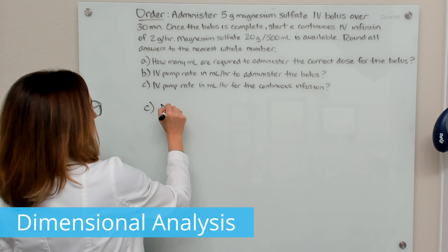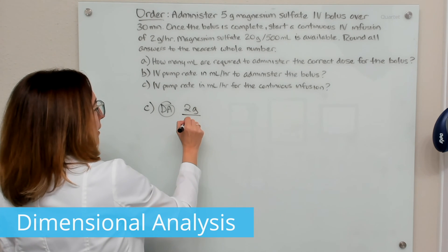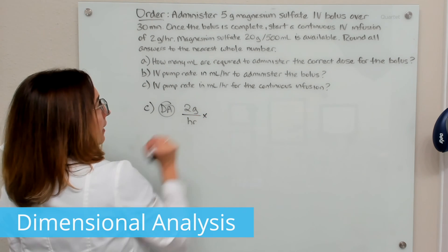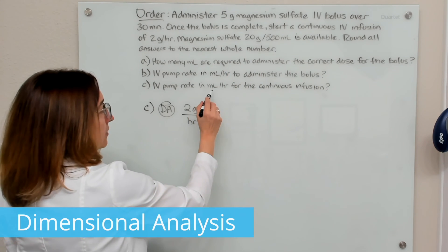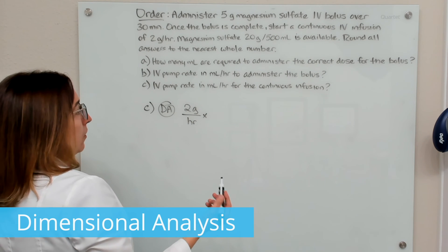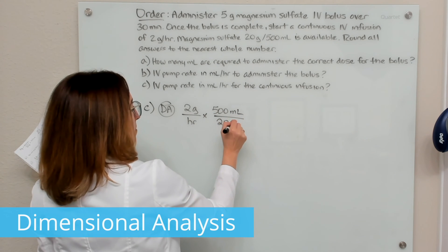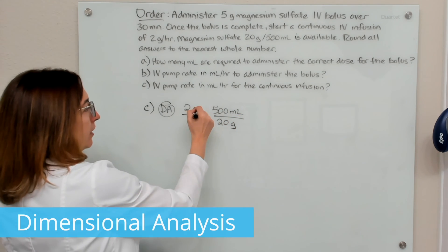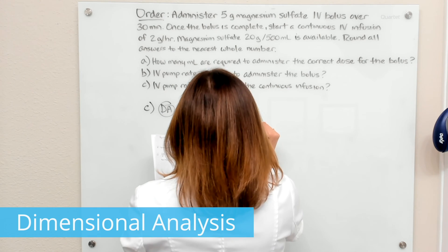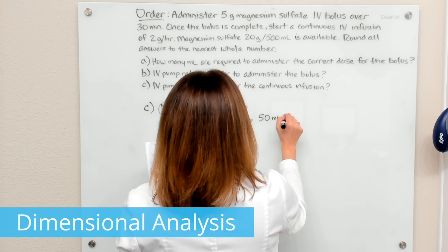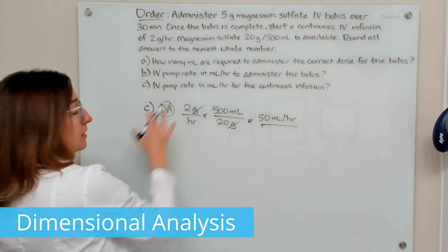Using dimensional analysis first, I would write down the ordered rate, which is two grams per hour. Then I would multiply by the available concentration to get milliliters per hour. I make sure my milliliters is on top and my grams are on bottom, such that grams cross off and I'm left with milliliters per hour. If you multiply this out, we end up with 50 milliliters per hour — the answer to part C using dimensional analysis.